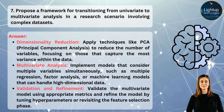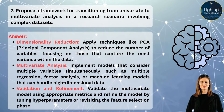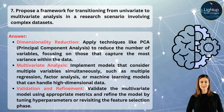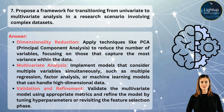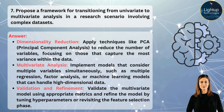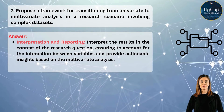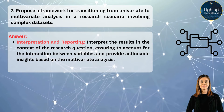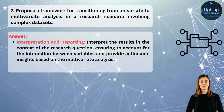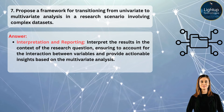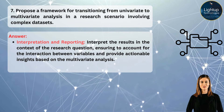Step 6: Validation and refinement — validate the multivariate model using appropriate metrics and refine the model by tuning hyperparameters or revisiting the feature selection phase. Step 7: Interpretation and reporting — interpret the results in the context of the research question, ensuring to account for the interaction between variables and provide actionable insights based on the multivariate analysis.